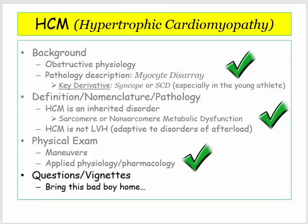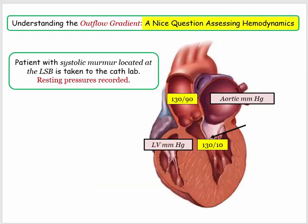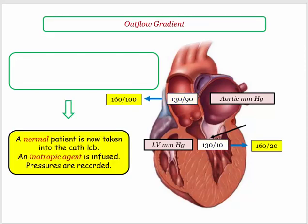Now let's bring all of this together with a series of four vignettes demonstrating how the NBME will assess your understanding of this condition. A patient has a systolic murmur heard at the left sternal border, and their baseline cardiac pressures are shown. For reference, a normal patient is taken to the cath lab, given an inotropic agent, and their pressures are recorded following the infusion. The baseline pressures rise both in the LV and in the aorta — an expected response to an inotropic infusion.